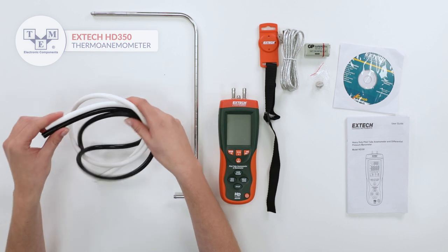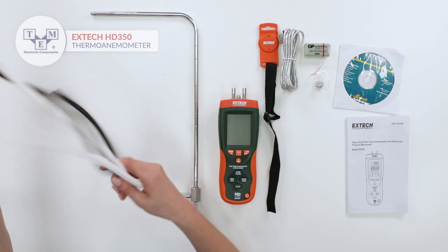Measurements are performed using an included pitot tube connected to the meter's terminal via rubber hoses.